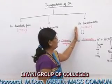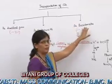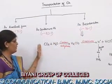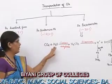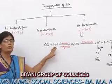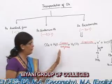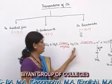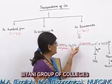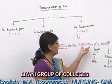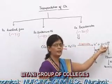Maximum carbon dioxide is transported in the form of bicarbonates. When carbon dioxide enters into erythrocytes, it binds with water molecules of erythrocytes in the presence of carbonic anhydrase and forms carbonic acid. This acid dissociates into hydrogen ion and bicarbonate ion.